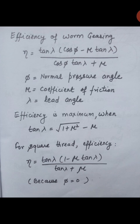Efficiency of worm gear is given by the formula: efficiency equals tan(λ) multiplied by (cos(φ) minus μ·tan(λ)), whole divided by (cos(φ)·tan(λ) plus μ). Where φ is the normal pressure angle, μ is the coefficient of friction, and λ is the lead angle.